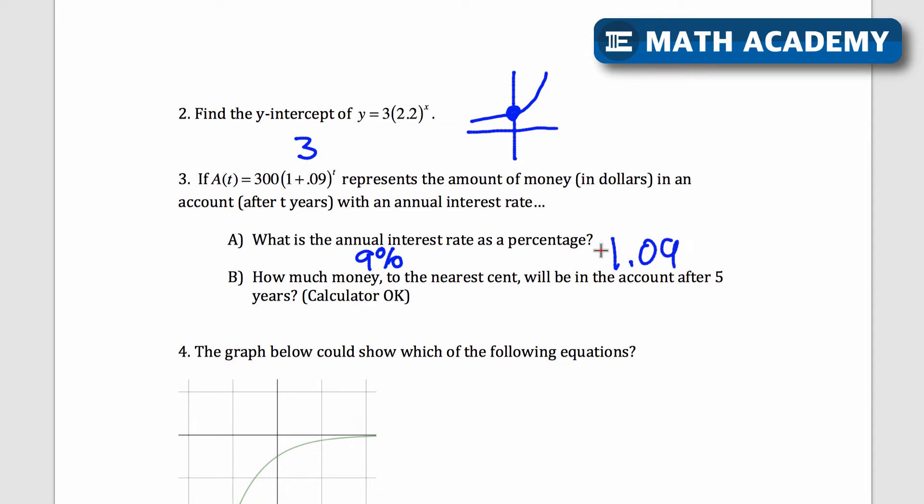Because I'm multiplying by 1.09. So if I just multiply by 1, I get the same as what I had originally. But this 0.09 is the extra amount that I get, and 0.09 is 9%.